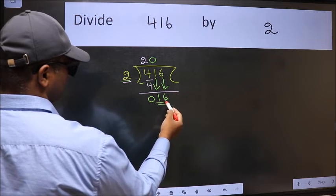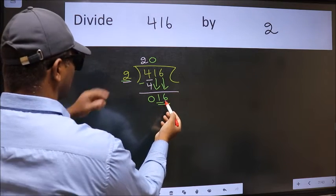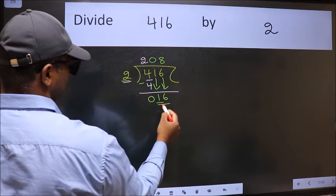6 down. Now 16. When do we get 16 in 2 table? 2 8s, 16.